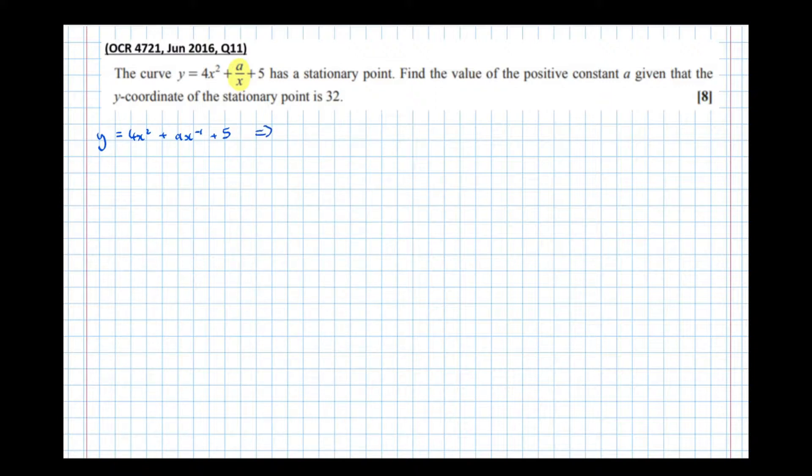And that means, that implies that dy/dx = 8x - ax^(-2). So I've multiplied by minus 1, I've multiplied by the power, then took 1 from the power.